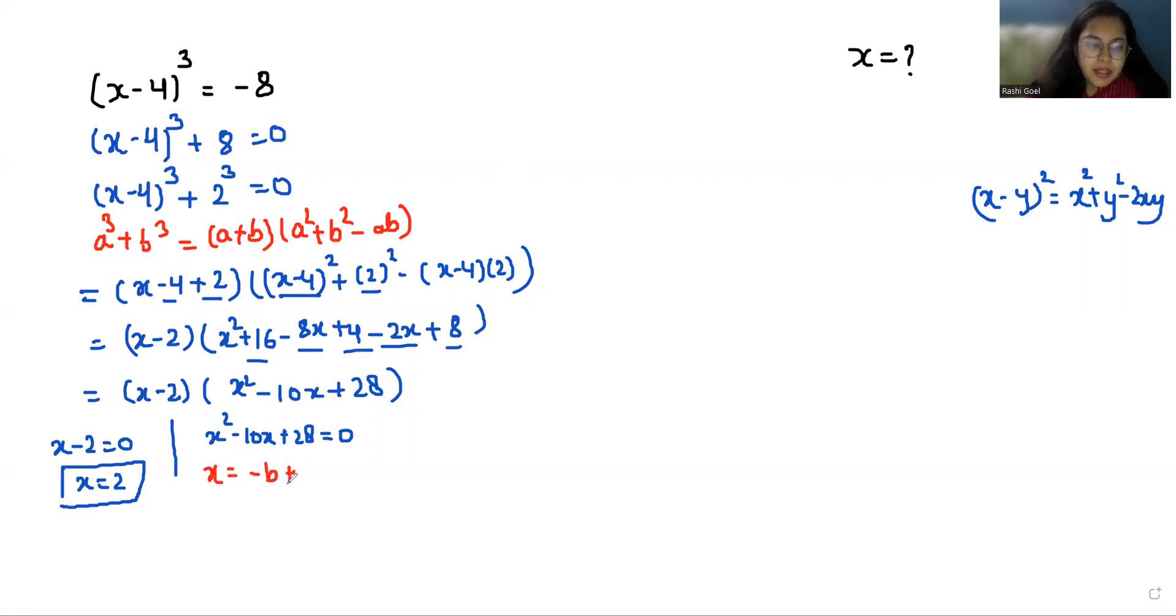x = (-b ± √(b² - 4ac)) / 2a, where a is the coefficient of x², b is the coefficient of x, and c is the constant. So x = (-(-10) ± √((-10)² - 4(1)(28))) / 2(1).